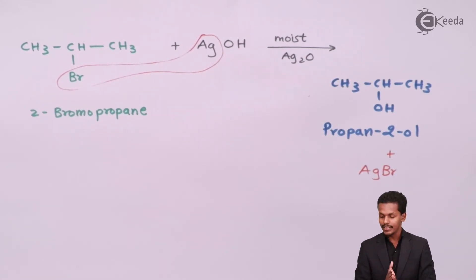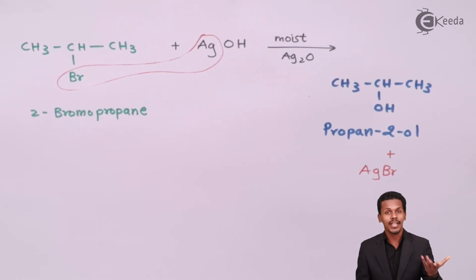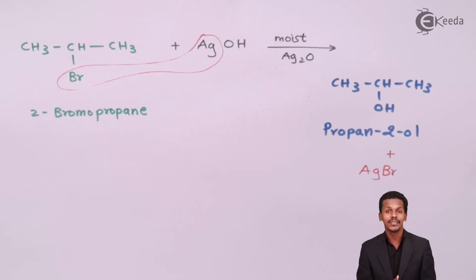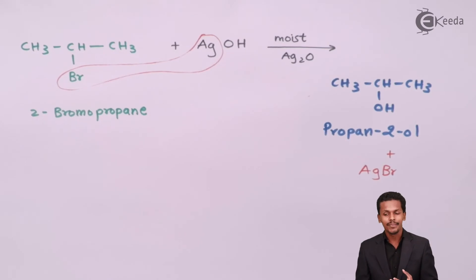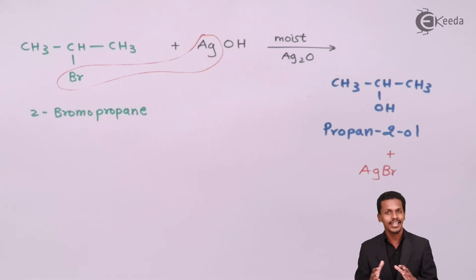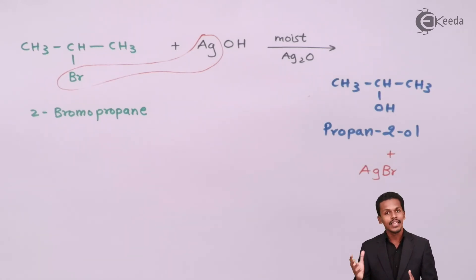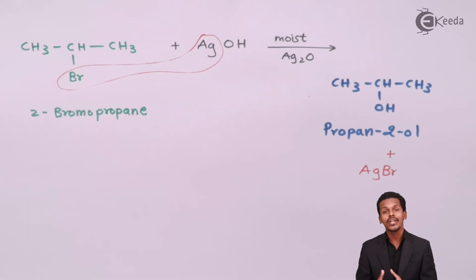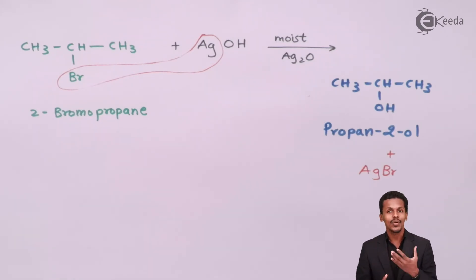In this lecture we learned how alkyl halides can be converted to alcohols using different reagents: aqueous KOH, aqueous NaOH, and moist silver oxide (via silver hydroxide). In all cases the ultimate product is an alcohol. Now let us solve some examples to understand what product would be formed and how the reaction should be represented when a particular reactant is given.